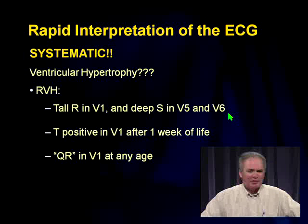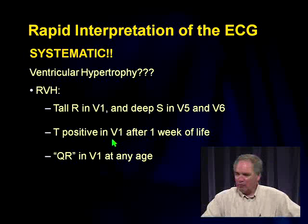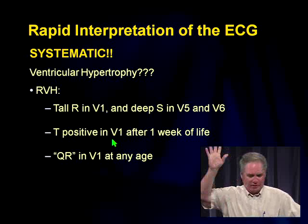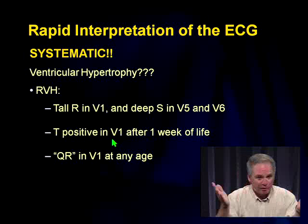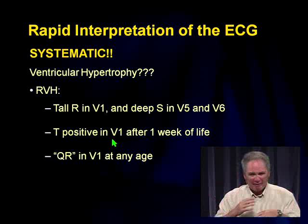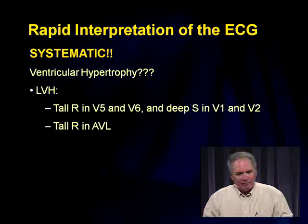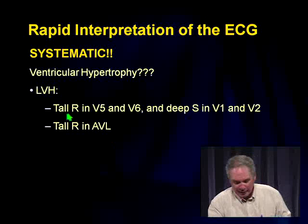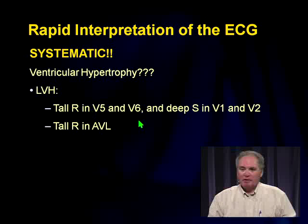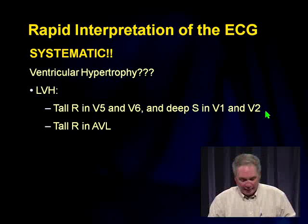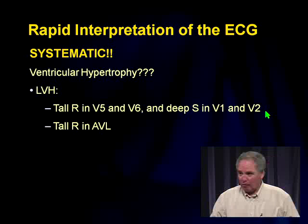A positive T wave in V1 is normal at birth, but by about day 3 to 5 it should flip to become negative — if it doesn't, that's right ventricular hypertrophy. A QR pattern in V1 at any age is also right ventricular hypertrophy. For left ventricular hypertrophy, look at V5 and V6: big tall R waves in those leads indicate LVH, sometimes accompanied by deep reciprocal S waves in V1 and V2, or a tall R wave in aVL.